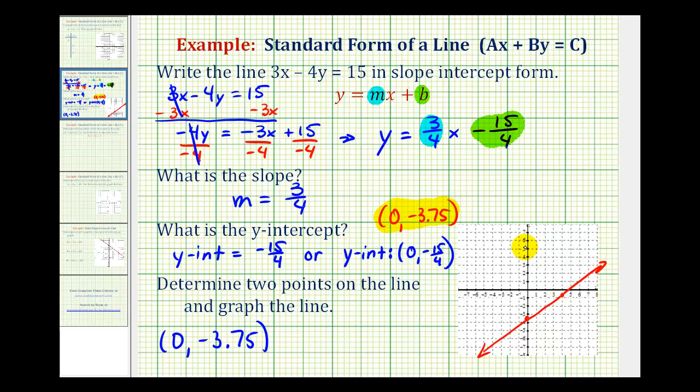So this point here would have the coordinates 0 plus 4, comma, negative 3.75 plus 3. Again, we added 3 to the y coordinate because the slope told us the vertical change was positive 3. And we added 4 to the x coordinate because the slope told us that the horizontal change was positive 4.